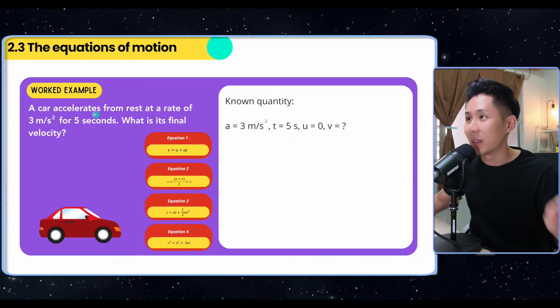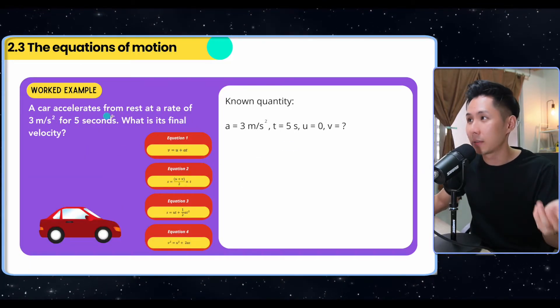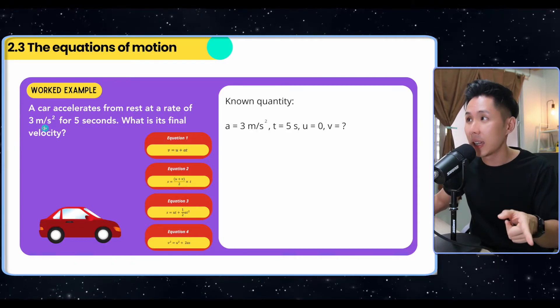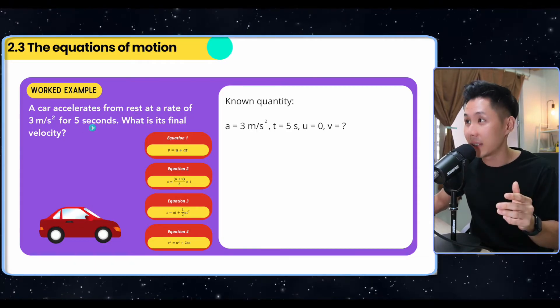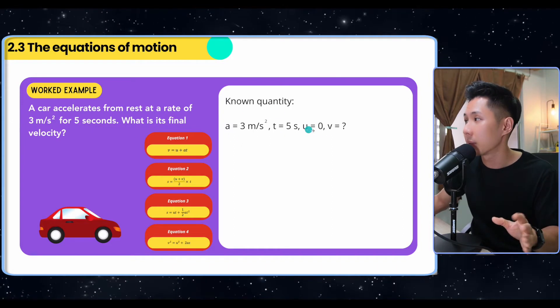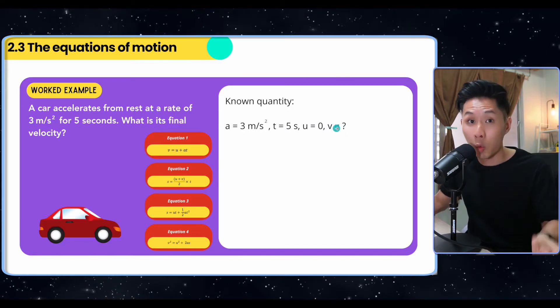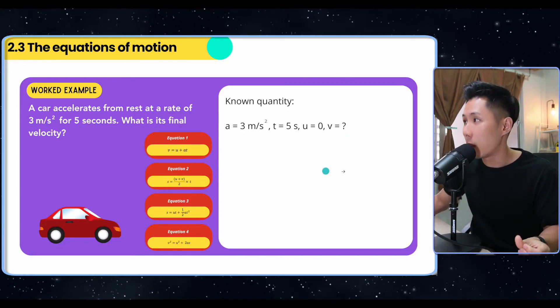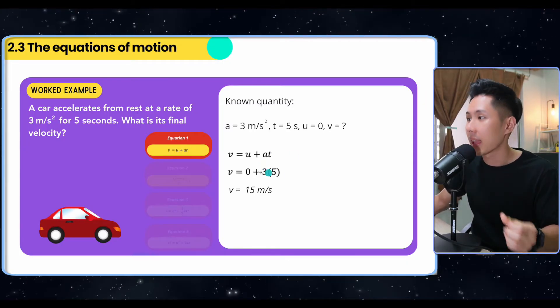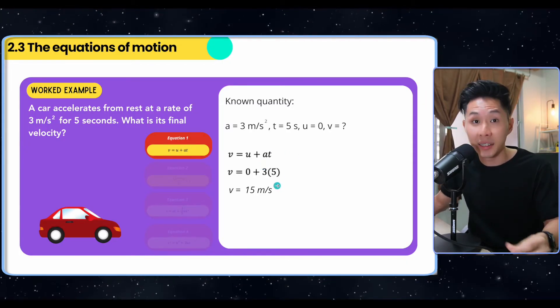So let's see more questions. So again, you have a car accelerates from rest. That's a key info, u equal to zero. Rate of three, this is the acceleration. Five seconds, the time, what's the final velocity? So just list down all the known quantities alongside with the quantity that you want to find. Determine which formula. In this case, it should be equation one, and substitute the value, and then you should be able to find out the answer already.